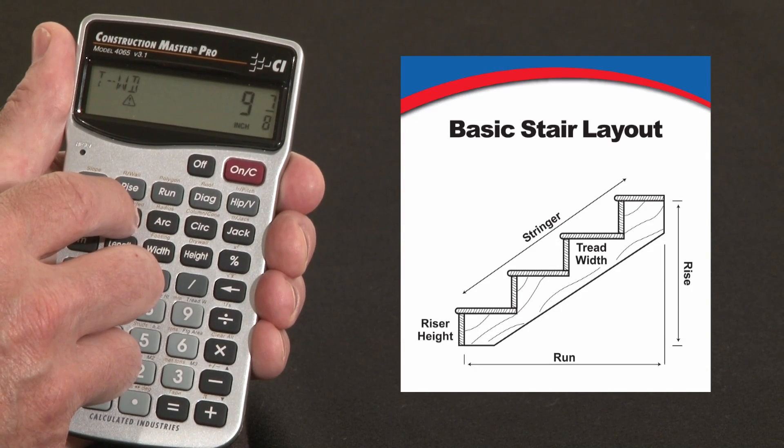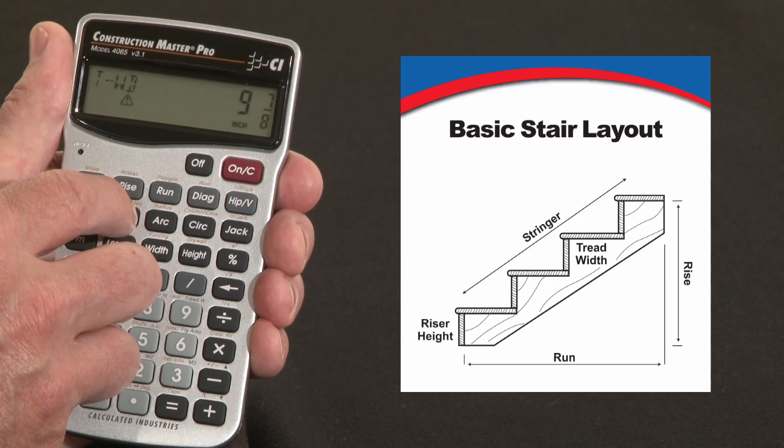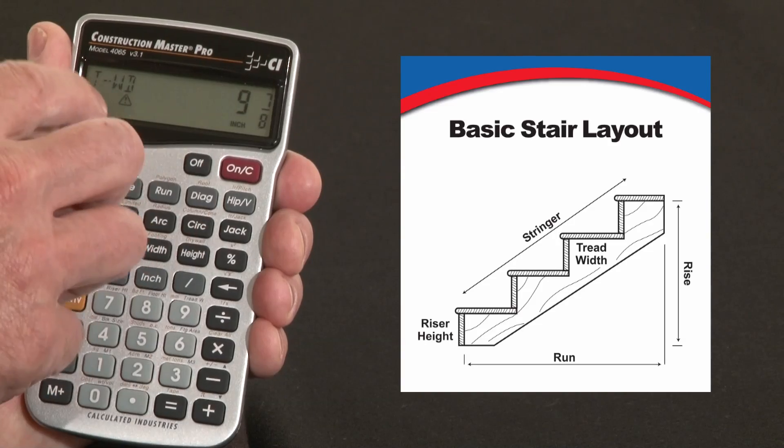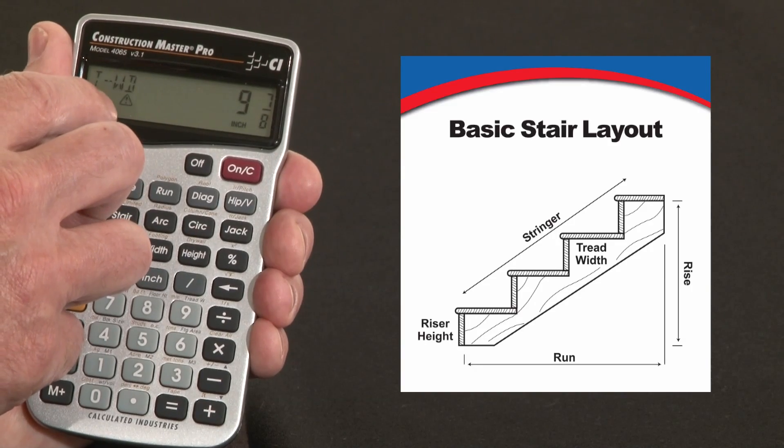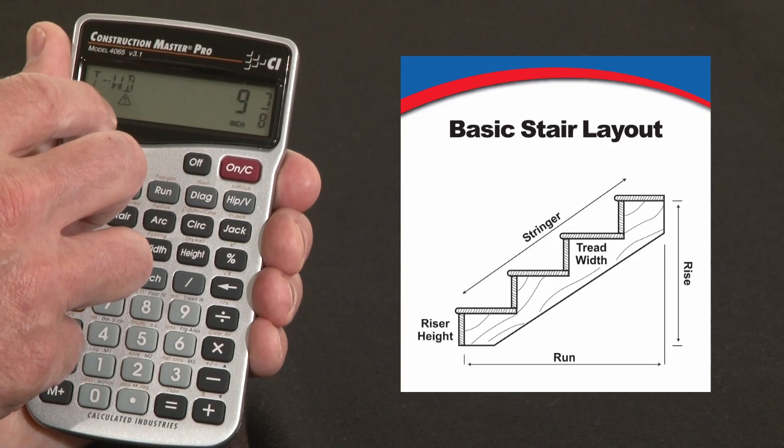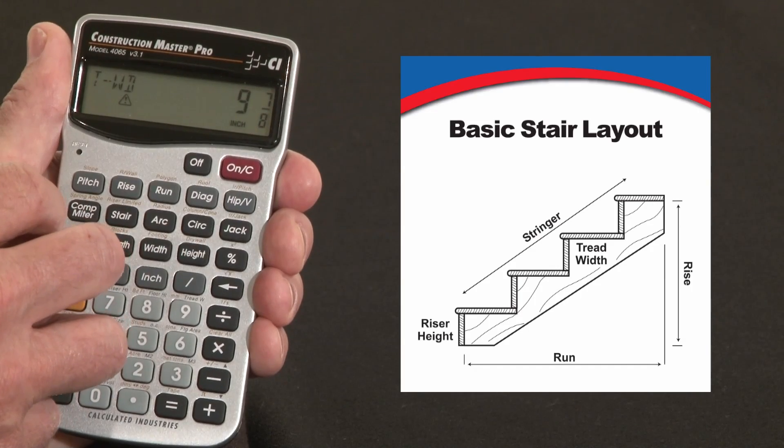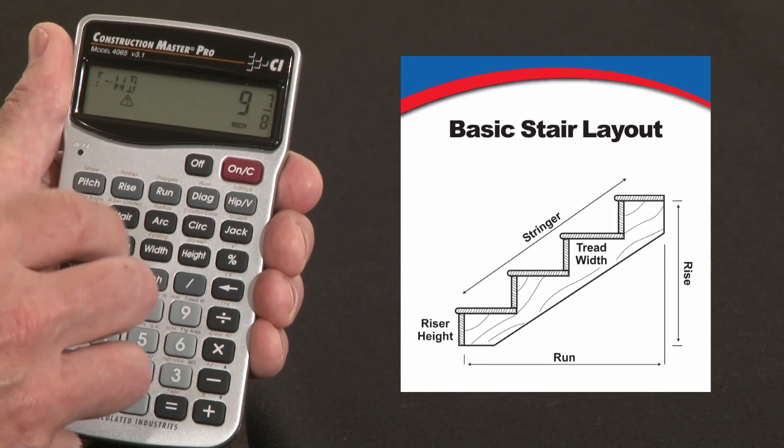But now when we get to tread width, it's changed. It's no longer the default 10 inch tread width, or the target tread width of 10 inches, it's 9 and 7 eighths. And there's a little triangle alert symbol there, just letting you know that the calculated tread width is a little bit less than your target. In this case, we'll assume you've checked it out with your client and the building inspector, and we'll just proceed on through.